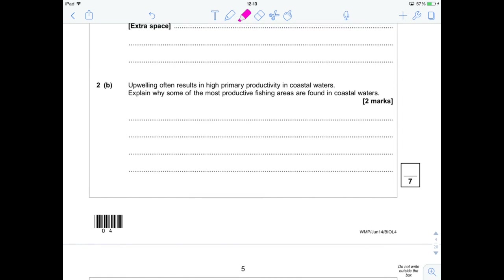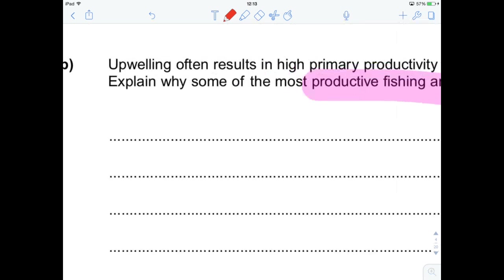So, 2b, upwelling often results in high primary productivity in coastal waters. Explain why some of the most productive fishing areas are often found in coastal waters. Well, if there's more nutrients, then plants or producers are going to be able to have more resources for growth. So, we can say,